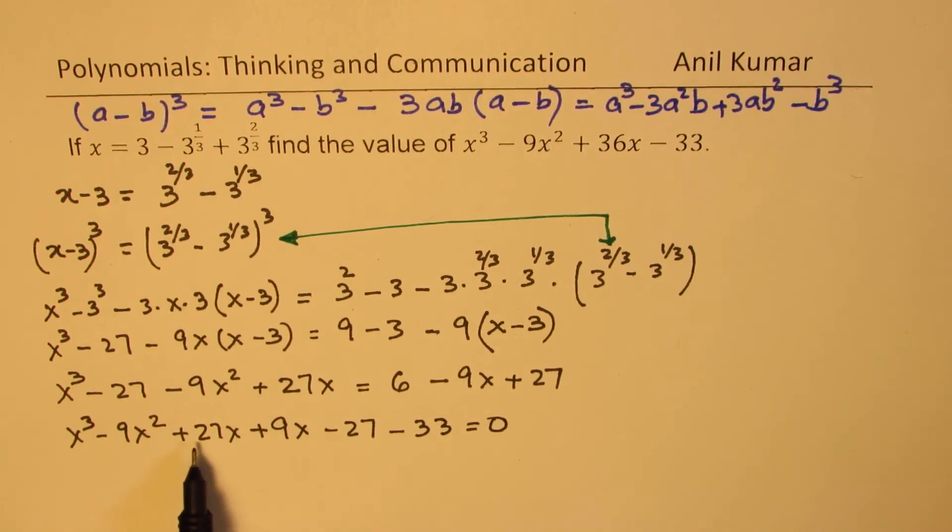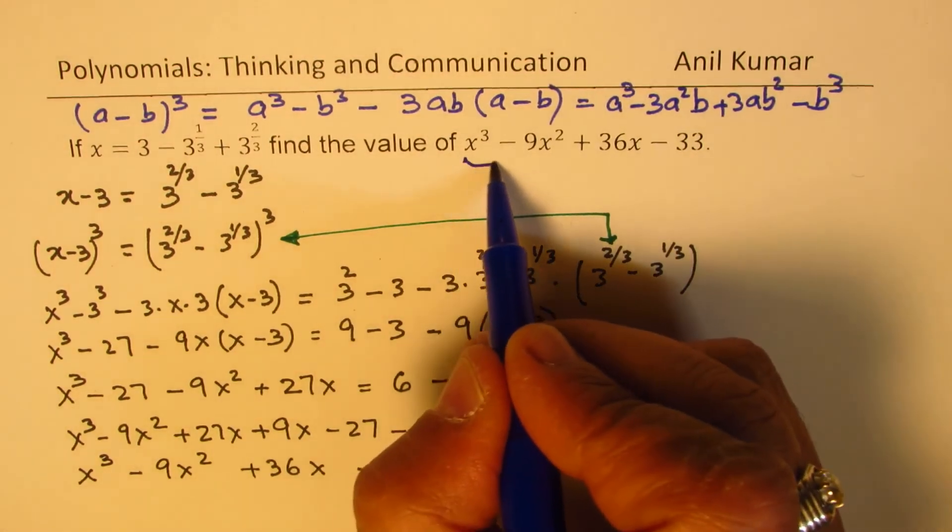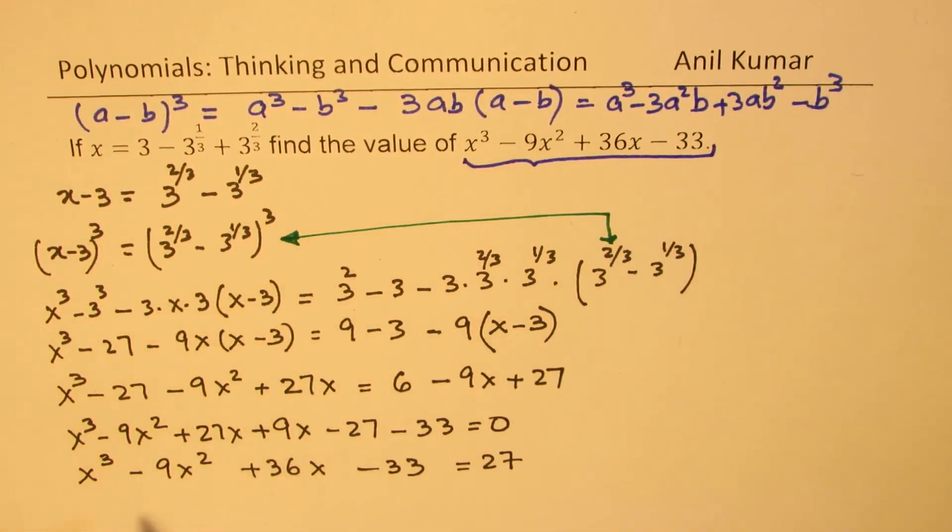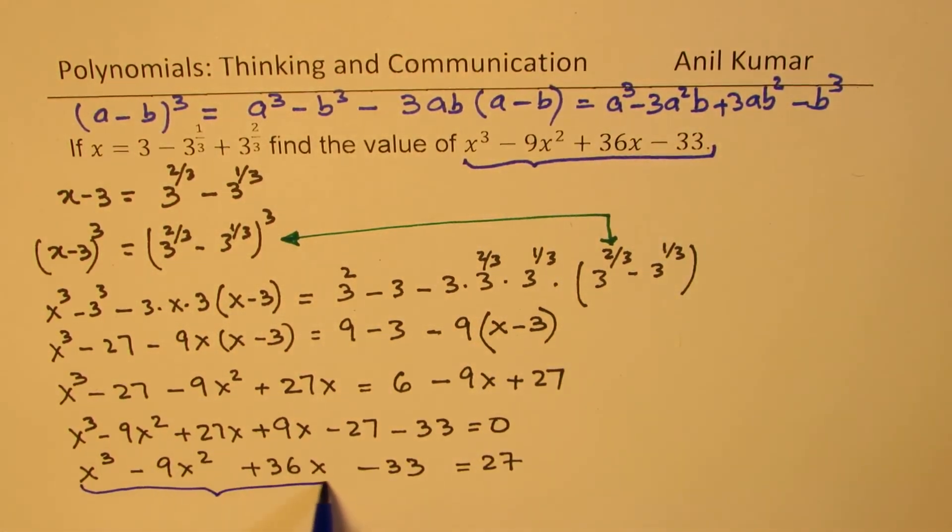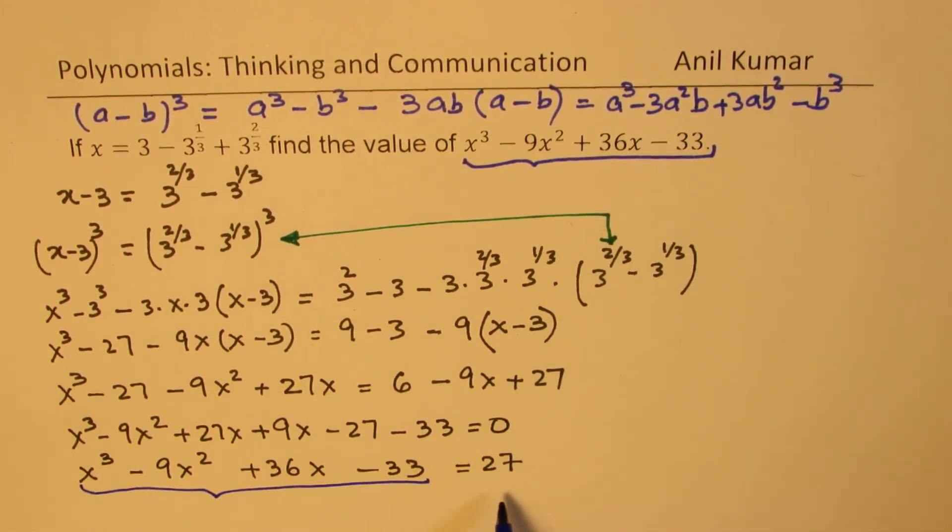So from here, we have 27 plus 9 is 36. So we get x cubed minus 9x squared plus 36x. We have minus 33. We can take this 27 to the right side. So from here, we can see that this expression is the same. x cubed minus 9x squared plus 36x minus 33, and this is equal to 27.